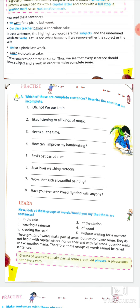Seventh one: 'wow, that's such a beautiful painting' — the helping verb is not present. The correct answer will be: wow, that is such a beautiful painting. 'Is' is missing, so you have to add it. Eighth question: 'have you ever seen Priya fighting with anyone?' — it makes complete sense. You will write: no improvement needed, it's a perfect sentence.